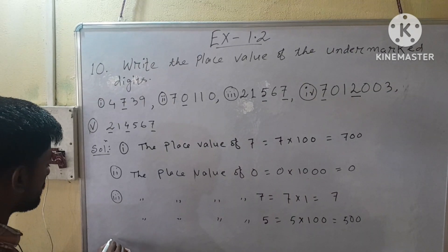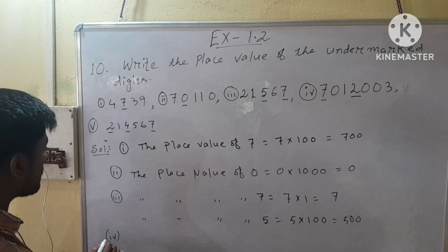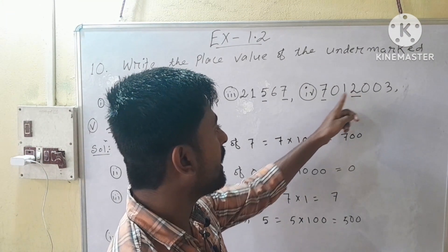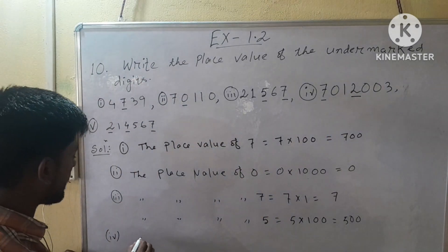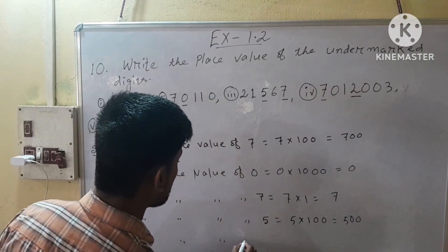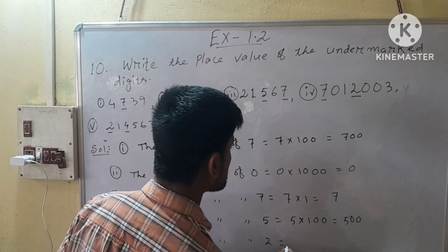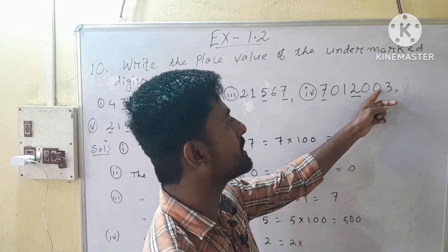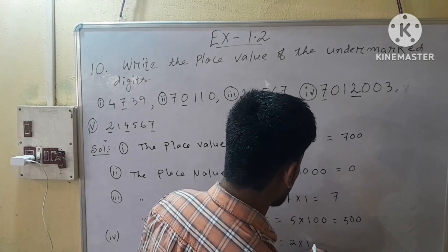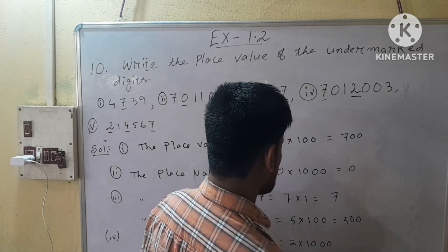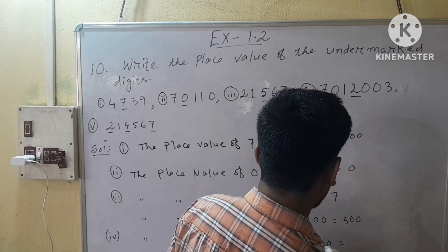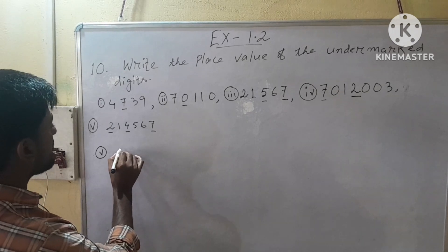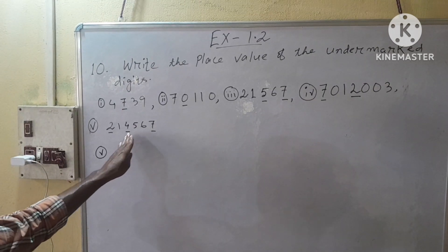Next, roman number 4 — we have to find the place values of 2 and 7. First of all, we find the place value of 2 is equal to 2 into... After 2 we have 3 digits, so we will put 3 zeros after 1. So it will be 2,000. Next, roman number 5 — here we have to find the place value of 3 digits: 7, 4, and 2.